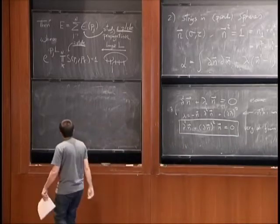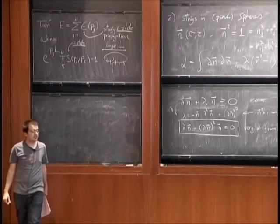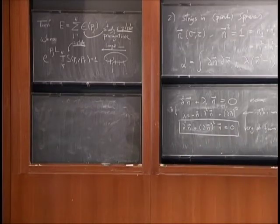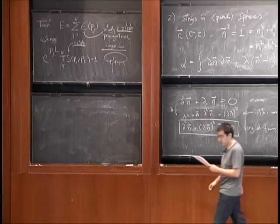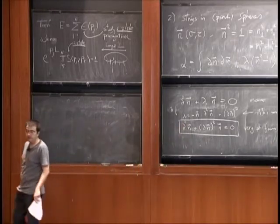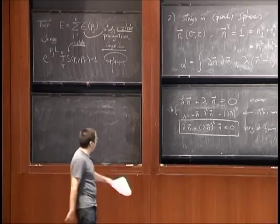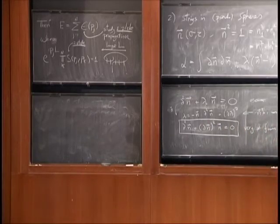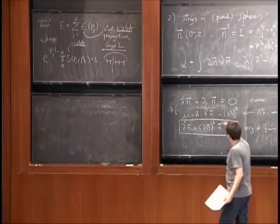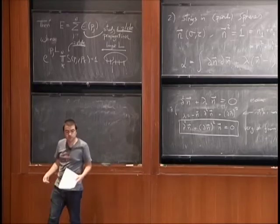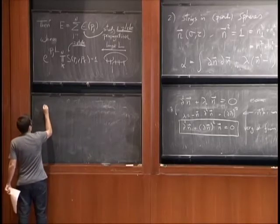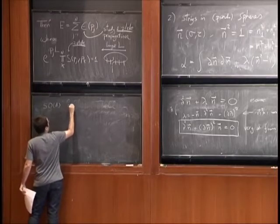So basically this tells us that we should expect that the O(D) sigma models are integrable — there are these charges at least at the classical level. We might expect also at the quantum level that we can completely solve them, find their exact S-matrix, and completely solve these models. Then we can try to use this experience to solve the sigma model which appears in the real superstring theory in AdS5×S5, where we put in all the fermions and extra complications. But this is like a warm-up, a toy model for AdS-CFT.